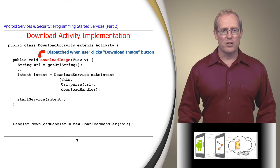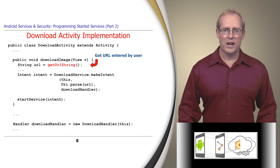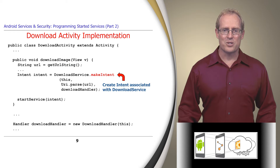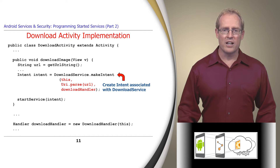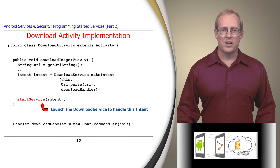After a user enters the URL into an EditText window and presses the download image button, Android dispatches the download image method, which gets the URL string entered by the user and calls the MakeIntentFactory method defined in DownloadService. This factory method creates the appropriate intent containing the desired URL as intent data, along with other information used to communicate from the download service back to the download activity. The StartService method is then called to launch the download service to handle this intent.